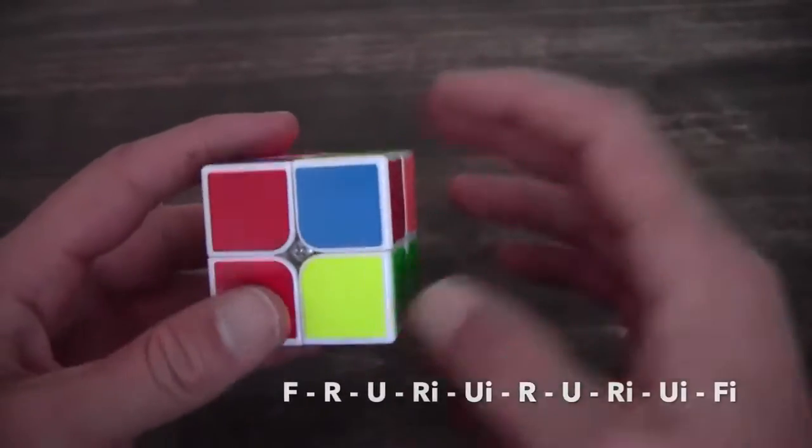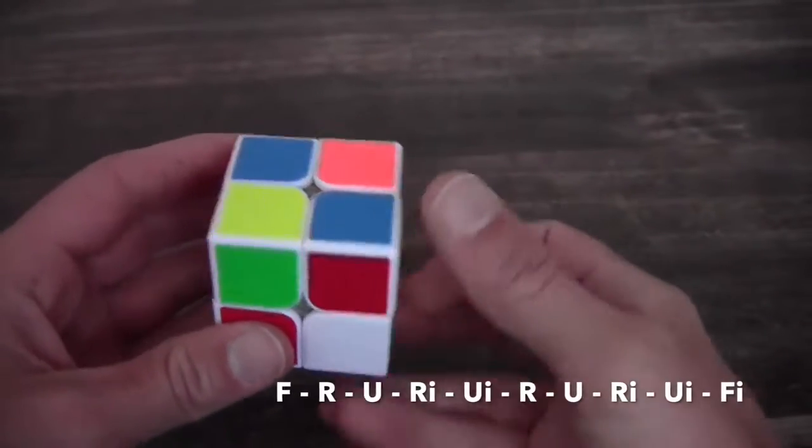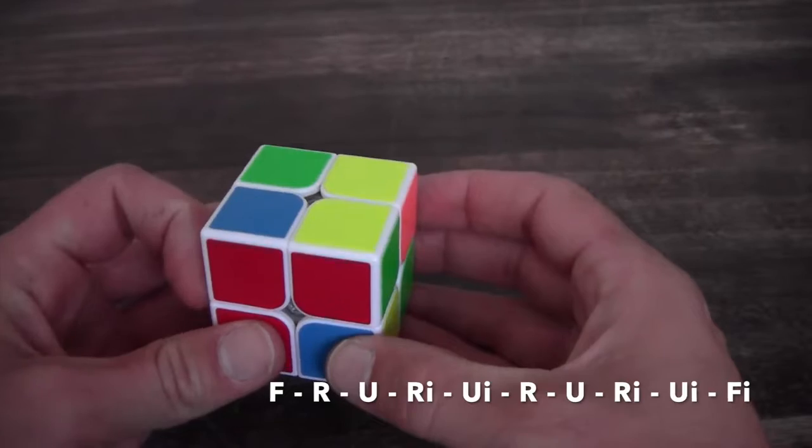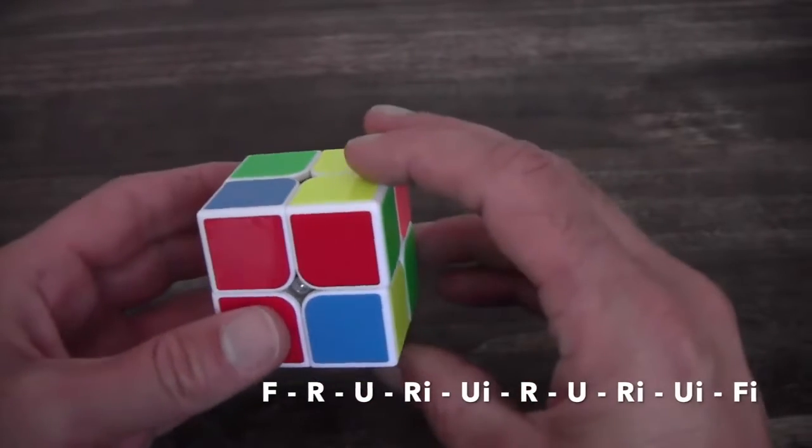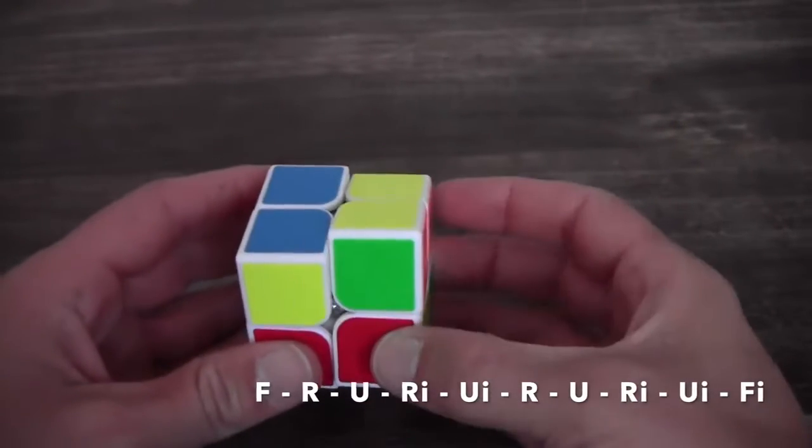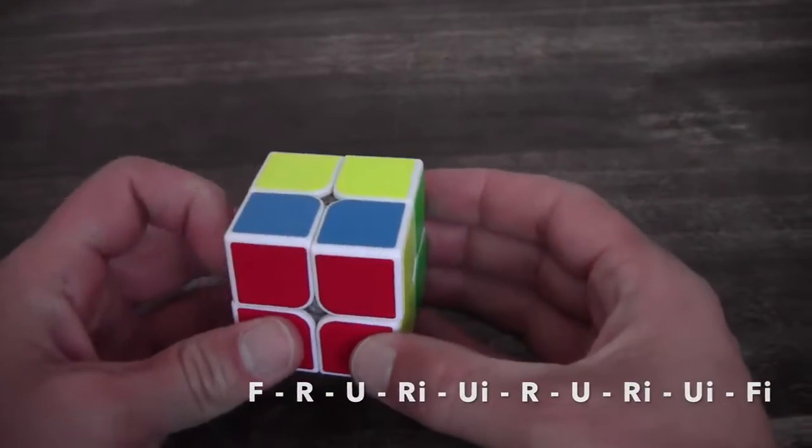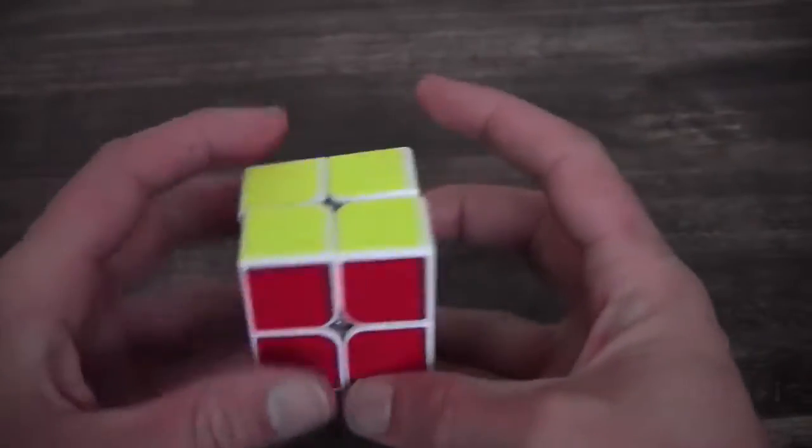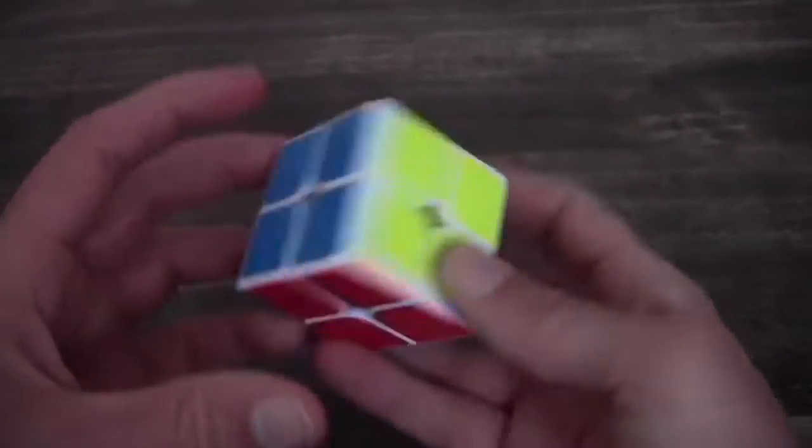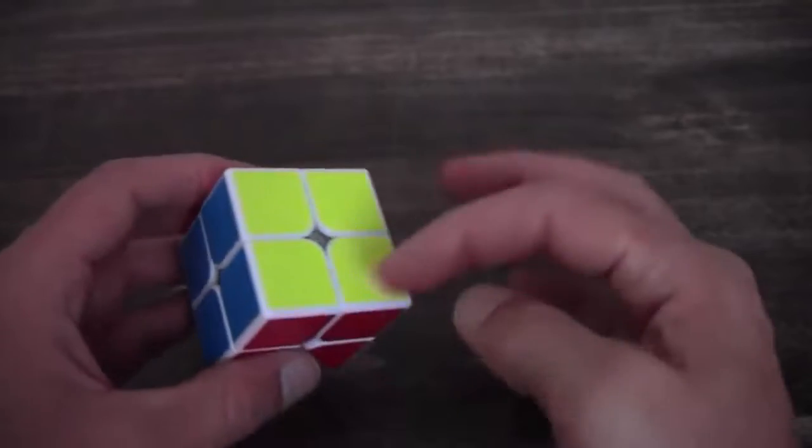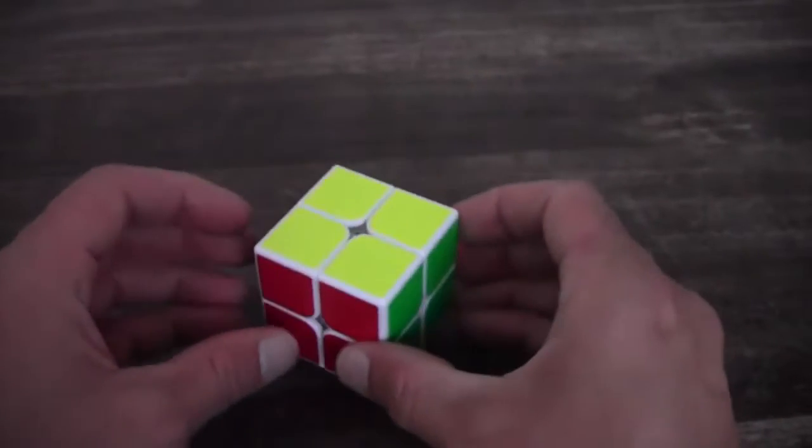F and then the sexy move R U R inverse U inverse and you have to repeat it twice. So R U R inverse U inverse and now with an F inverse you will fix - well in this case we fix the total cube but you will fix the yellow square.